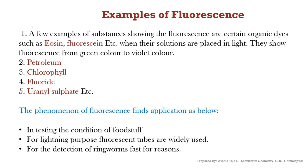We can see some examples of fluorescence. A few examples include eosin, fluorescein, petroleum, chlorophyll, fluorides, and urinal sulfate. These are all fluorescent substances. We can find applications of fluorescence in testing the condition of foodstuffs, for lighting purposes fluorescent tubes are widely used, and for the detection of ringworms, the fluorescence process is also used.